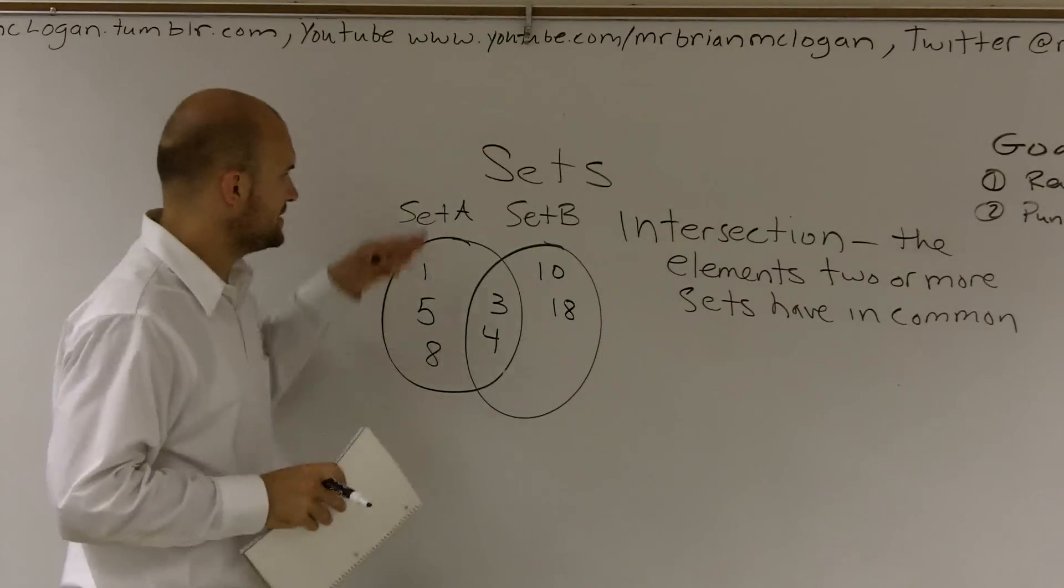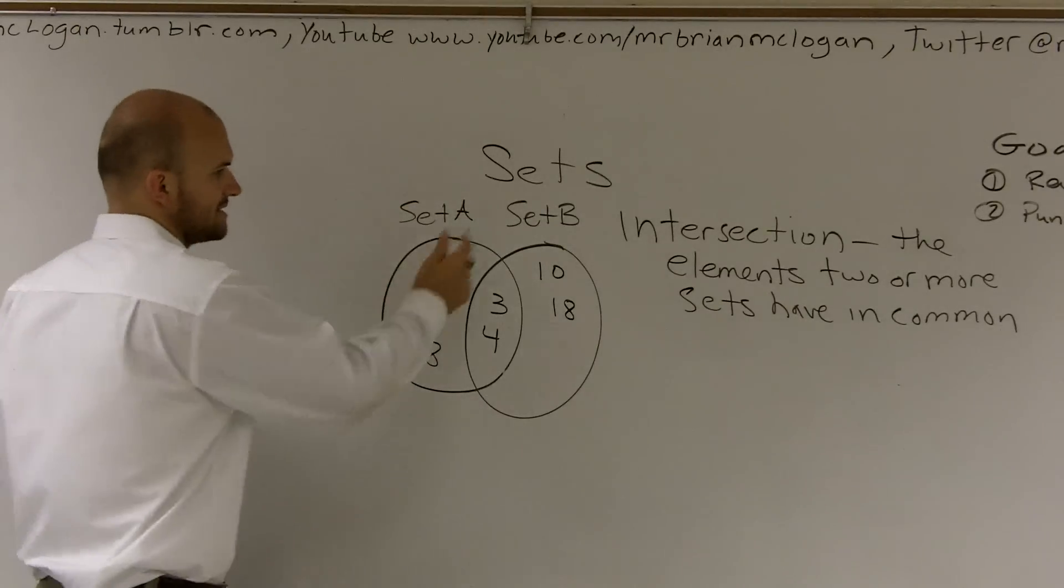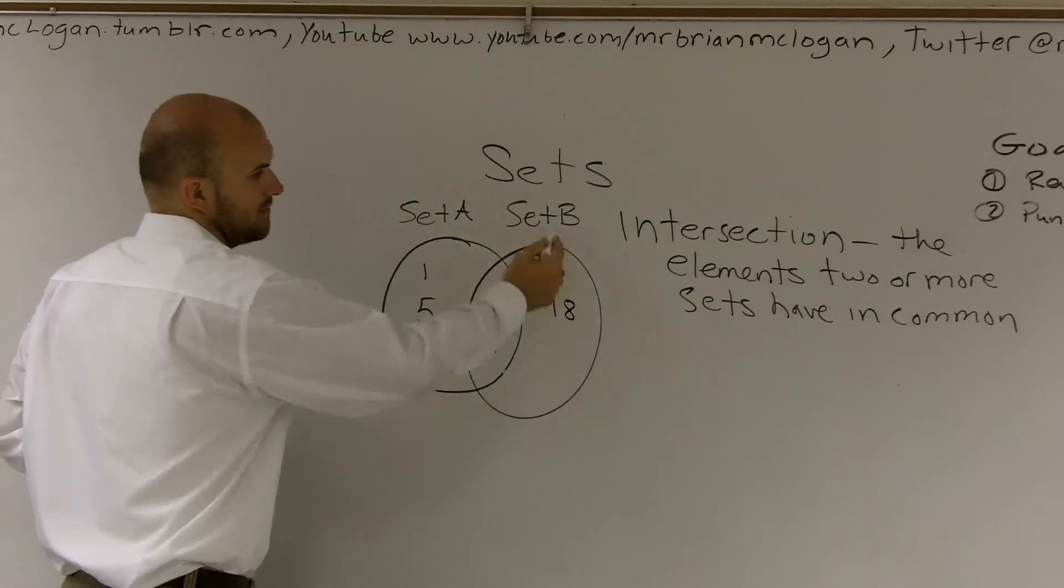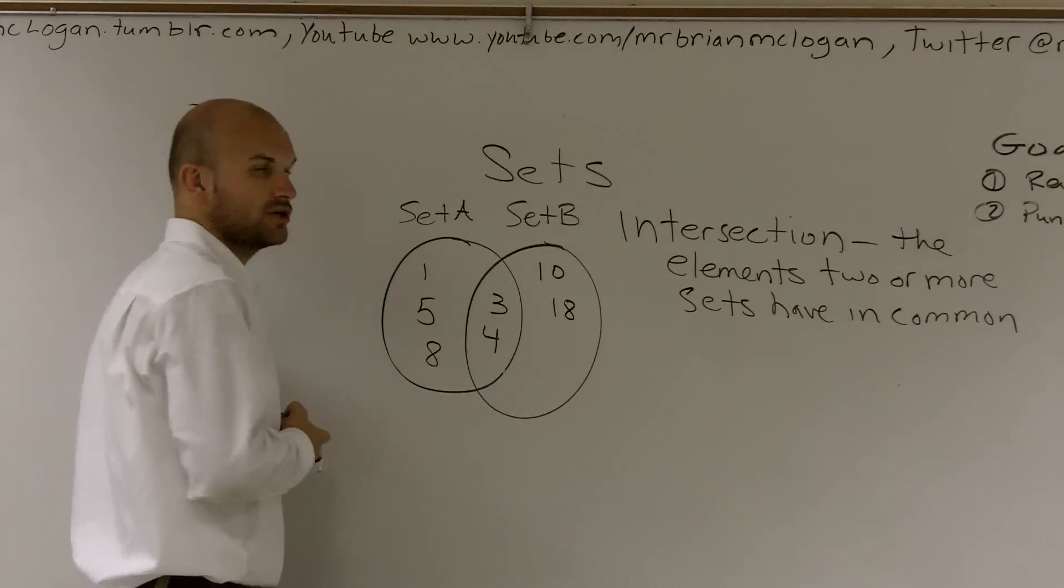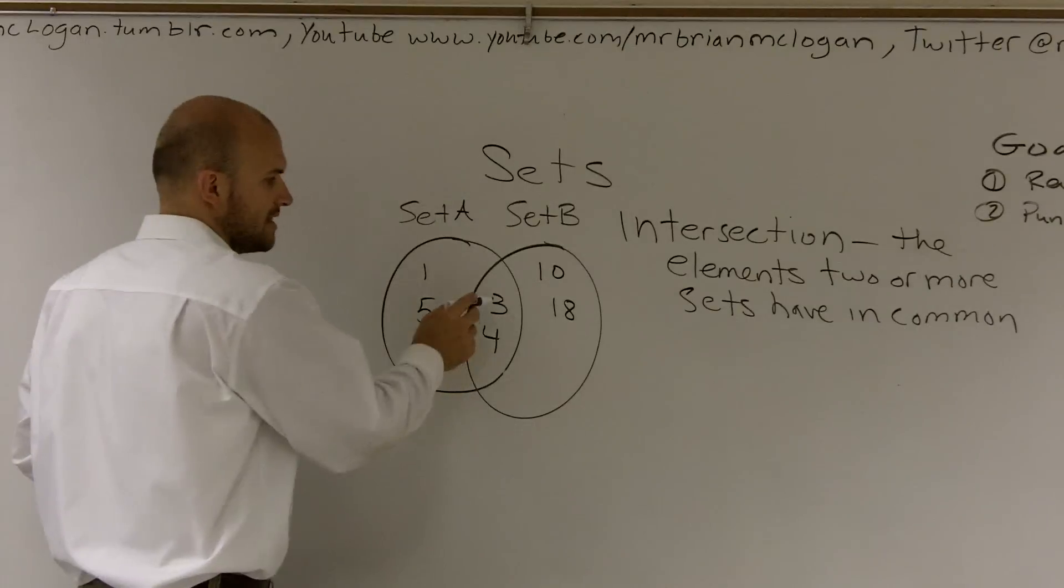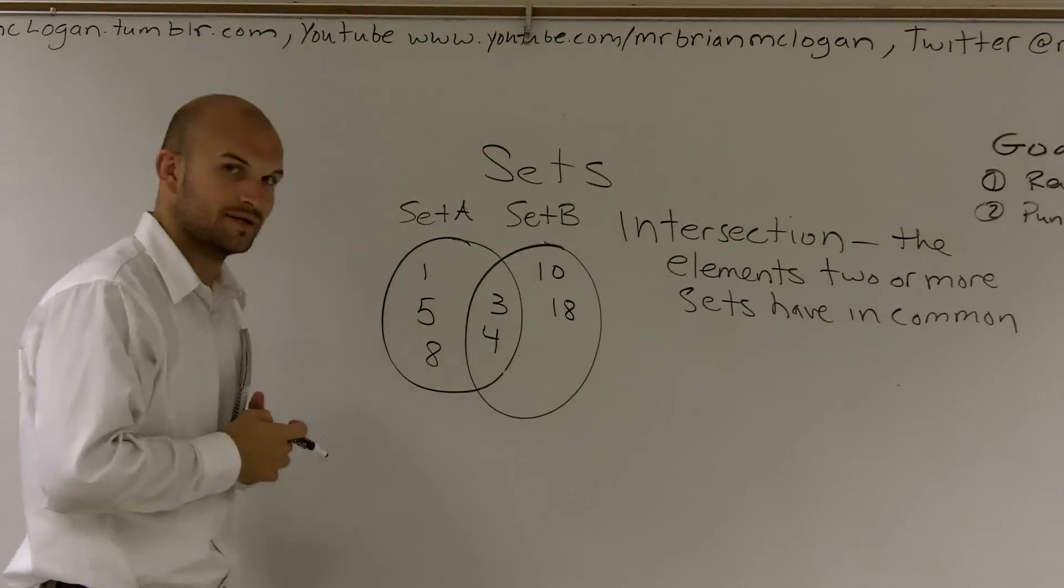So, if you can see between set A and set B, set A is all of this circle, and set B is all of this circle. So if I was going to look at the intersection of these two circles, we would say that what do these two have in common? We can say that three and four is what they have in common.